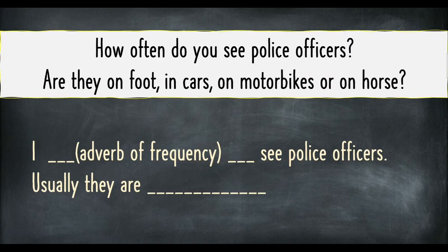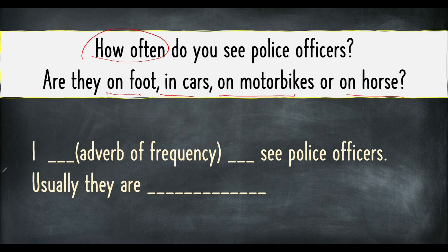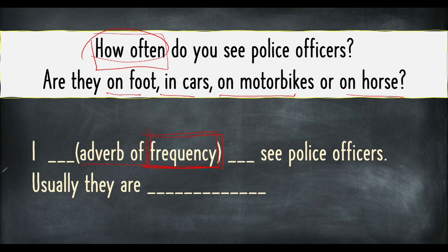The last question in exercise 1: How often do you see police officers? Berapa kerap kamu nampak pegawai polis? And then: Are they on foot, in cars, on motorbikes, or on horse? To answer 'how often,' your answer must contain an adverb of frequency — kata penguat yang menunjukkan kekerapan. For example, do you selalu or jarang-jarang see police officers.